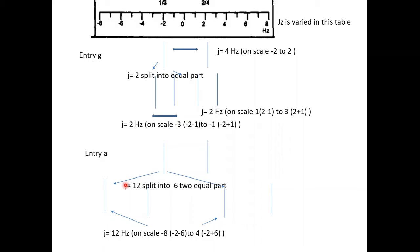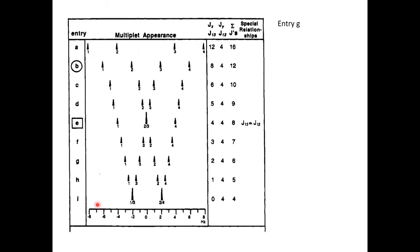Similarly, for J equals 4 Hz here and a coupling constant of 12 Hz: 6 units here and 6 units here. You will get peak positions at minus 2 minus 6 equals minus 8, and minus 2 plus 6 equals 4. So that will give you positions at minus 8 and 4, as observed in the last slide. The other peaks are also similarly calculated.